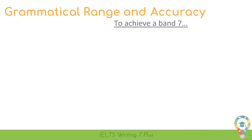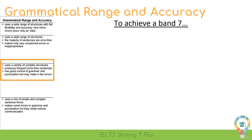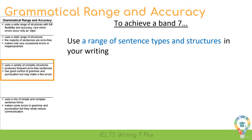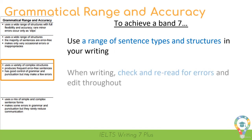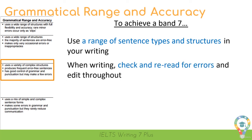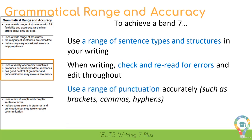Here are the band descriptors for grammatical range and accuracy, and this is what we'll need to do to achieve a band 7. Use a range of sentence types and structures. When writing, it's really important that you read back and check for any errors and edit them out. Also use a range of punctuation — brackets, commas, hyphens. These are all really easy pieces of punctuation you can use to show the examiner you have a good level of fluency and are able to use grammar in English really well.